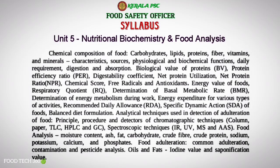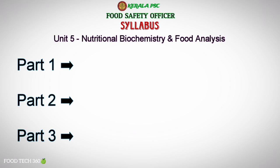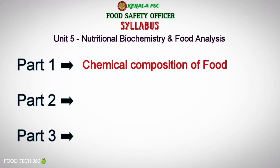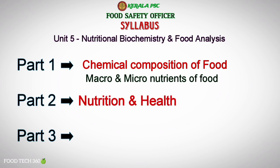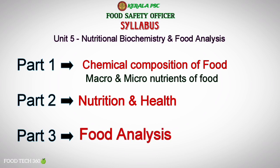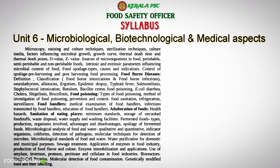Unit 5, Nutritional Biochemistry and Food Analysis, is divided into 3 parts. The first part is the chemical composition of food, covering macro and micronutrients related topics. The second part covers nutrition and health parameters related topics. The third part covers food analysis related topics.